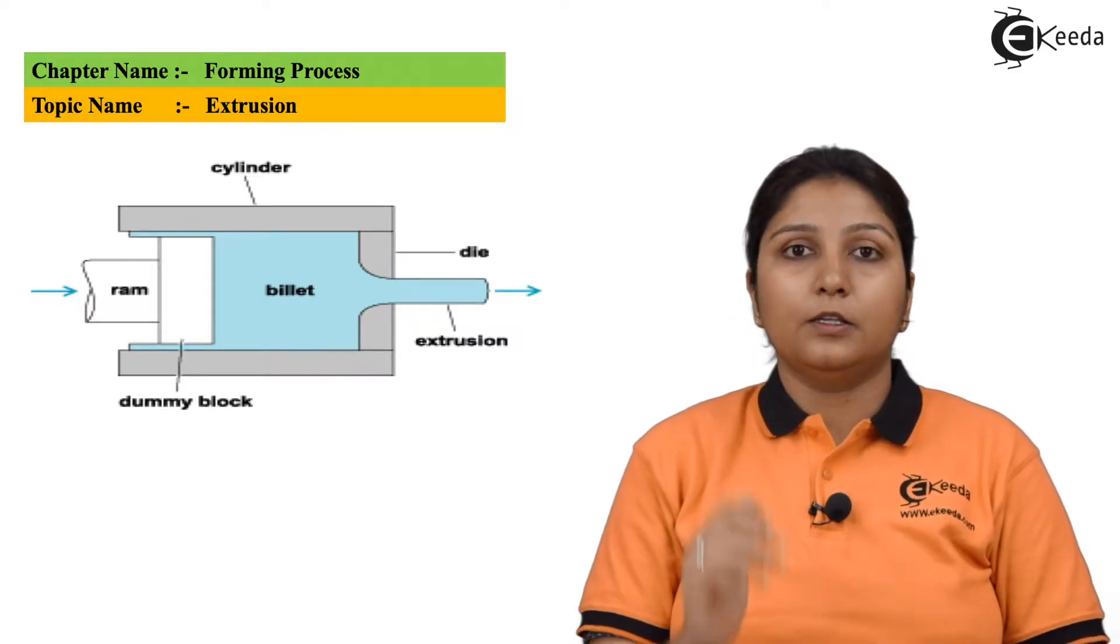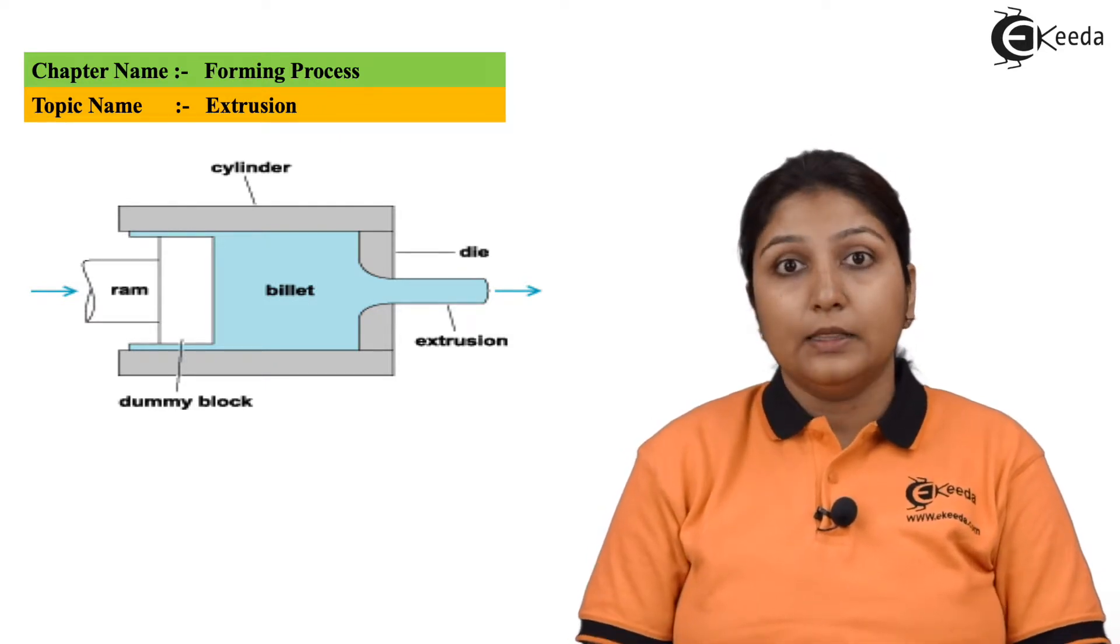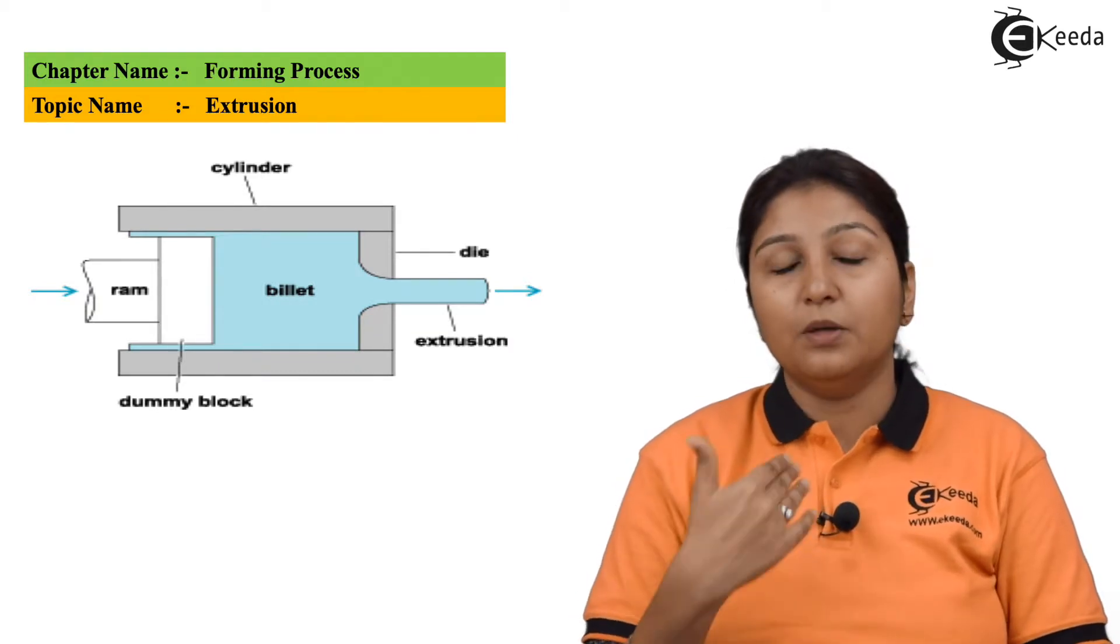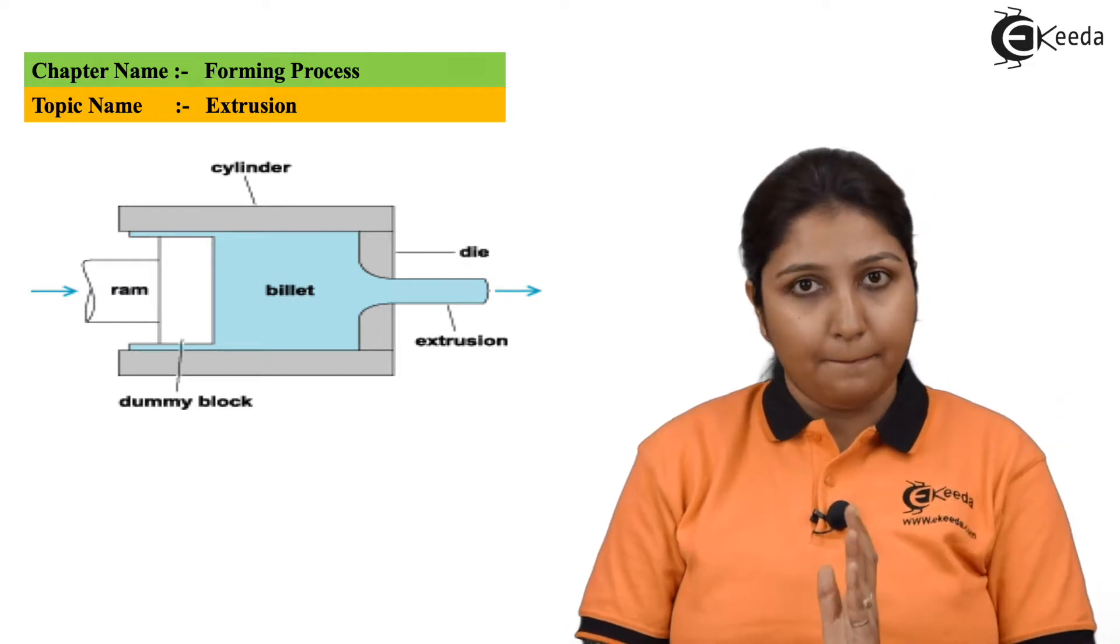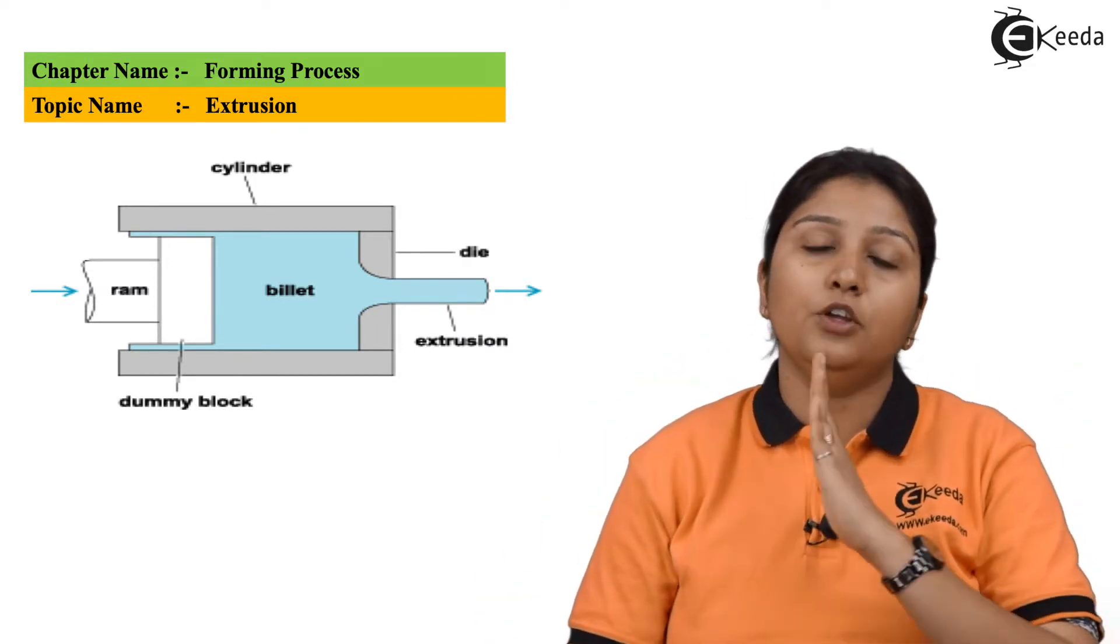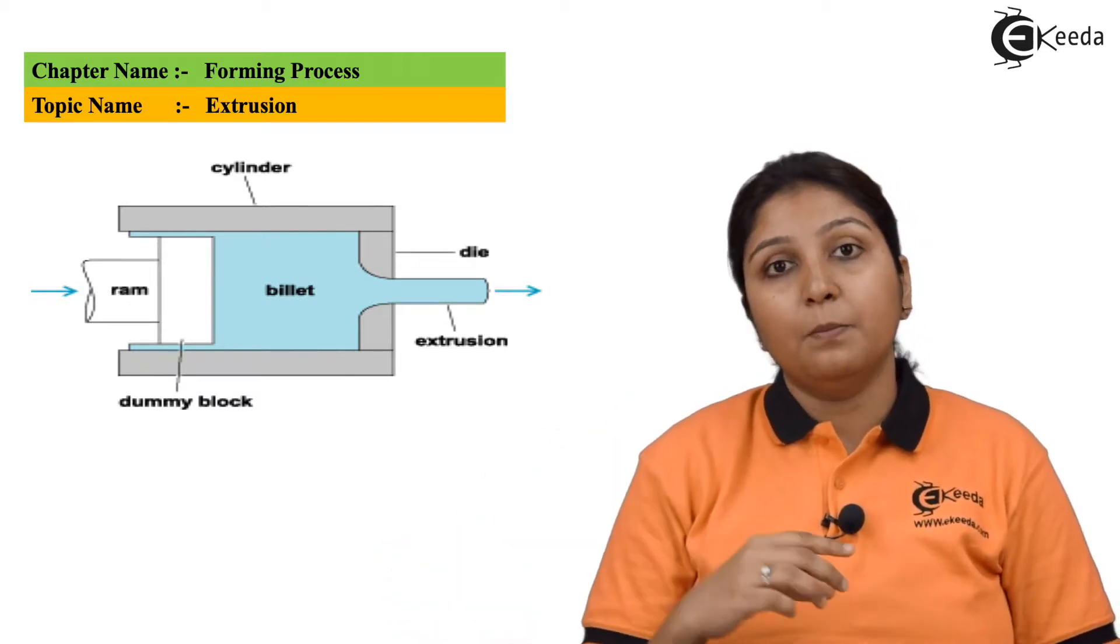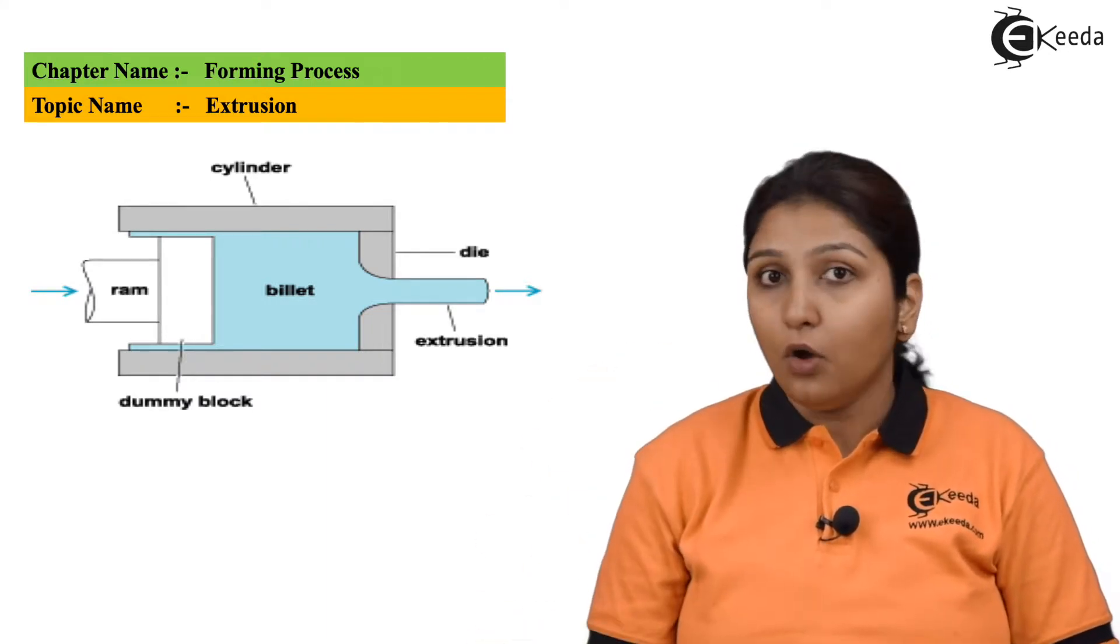Extrusion can be easily explained by this picture. You can see there is a cylinder, a billet in which material is stored, a ram, and an opening. The ram pushes the billet so that material comes out from the opening in the form of a rod or hollow object.